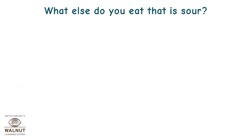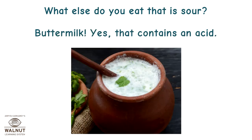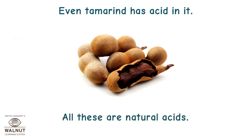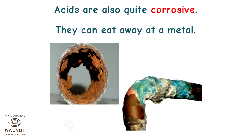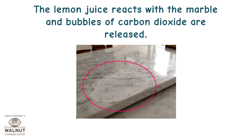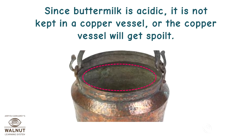What else do you eat that is sour? Buttermilk — yes, that contains an acid. Even tamarind has acid in it. All these are natural acids. Acids are also quite corrosive; they can eat away at a metal. Have you seen what happens when lemon juice falls on a marble kitchen counter? The lemon juice reacts with the marble and bubbles of carbon dioxide are released. Since buttermilk is acidic, it is not kept in a copper vessel or the copper vessel will get spoiled.